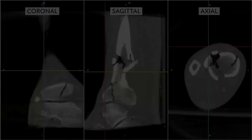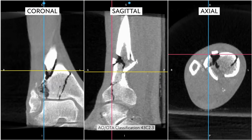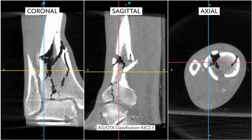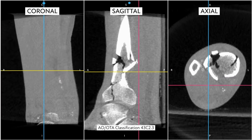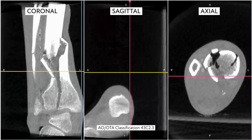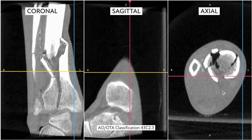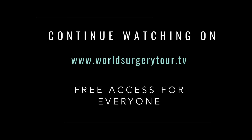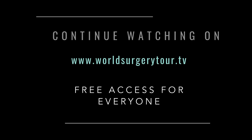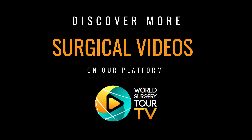But let's look at the CT scan a little bit more closely to assess whether there are any other surprises in the articular block.